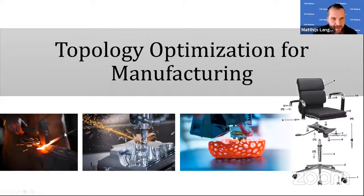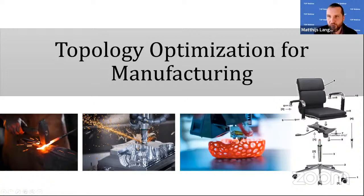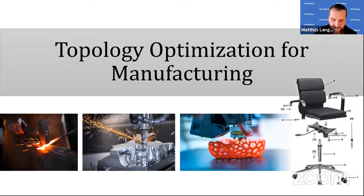There are still many open questions, which is why we have this session. Manufacturing processes are broadly categorized into four groups: forming processes like forging where material shape changes but amount does not; subtractive processes like milling where material is removed; additive processes like 3D printing where material is added; and assembly, where a product is composed by joining several parts together.